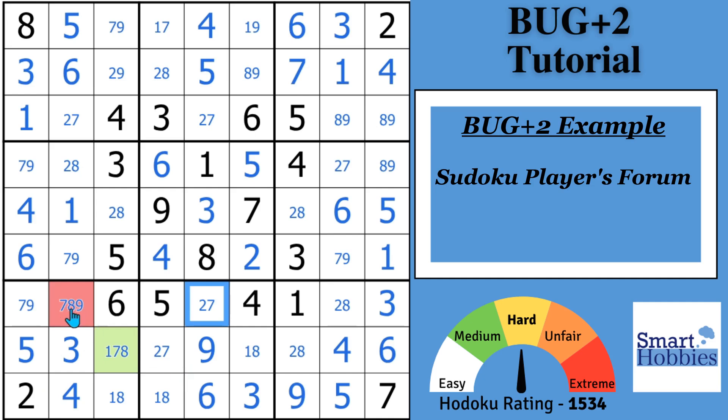And what you may see is that you have all bi-value cells in this puzzle, except for these two that are colored. And so what we have is called a BUG Plus 2 situation. And we're going to be able to solve that for you.